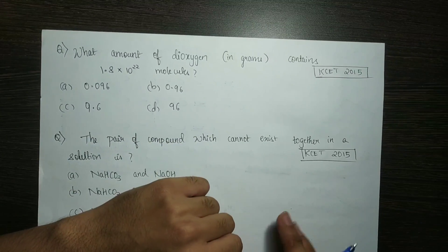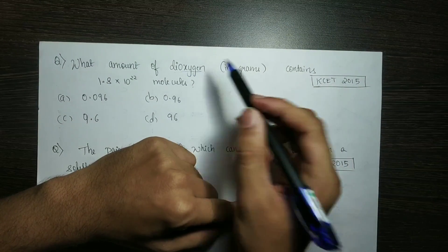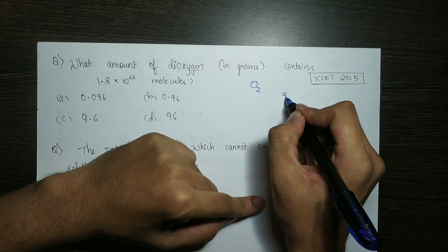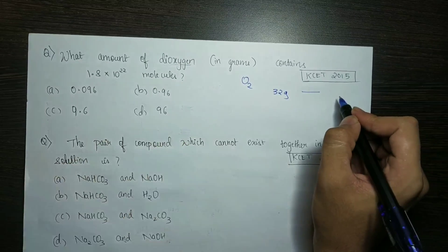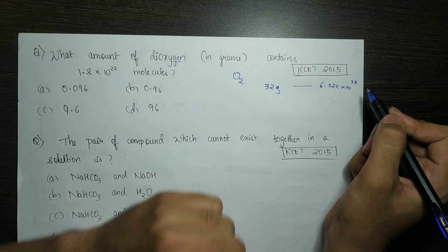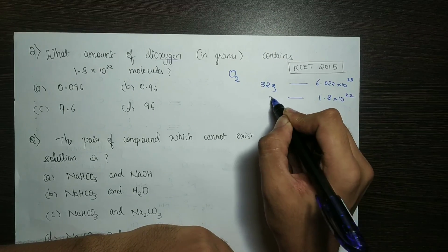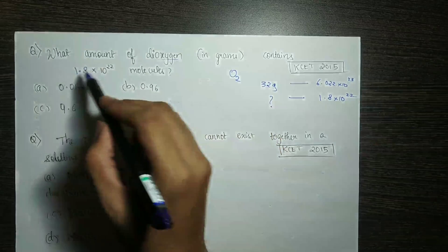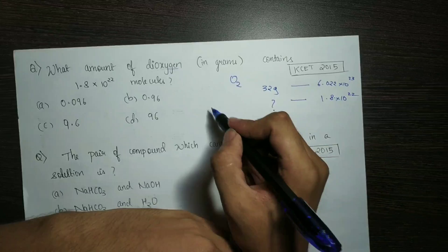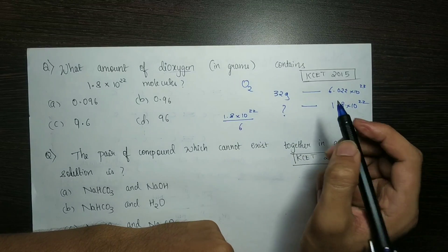The next question: what amount of dioxygen contains 1.8×10²² molecules? Dioxygen is O2. The atomic mass of O is 16 grams, so O2 is 32 grams. 32 grams is 1 mole of oxygen, and 1 mole contains 6.022×10²³ molecules. So if we have 1.8×10²² molecules, cross multiply to find the grams.